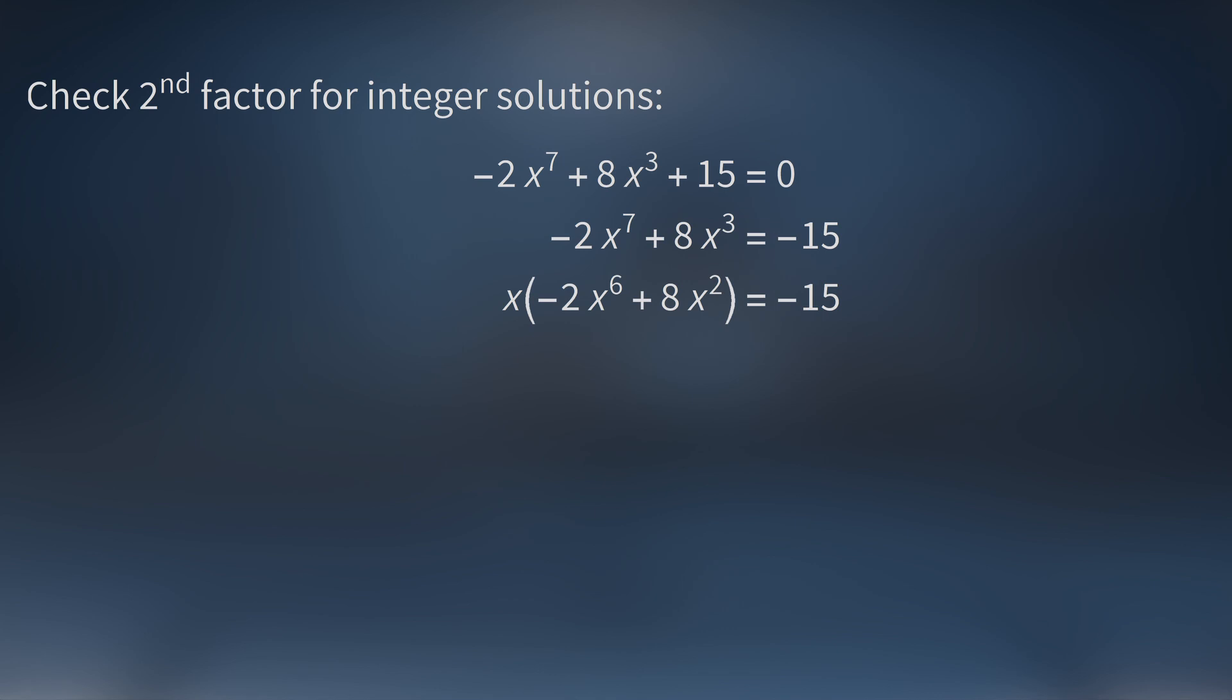Our objective is to find any integer x that's a solution to this equation. This means the first factor x needs to be an integer. But if x is an integer, then the second factor, negative 2x to the sixth plus 8x squared, will also be an integer. This is because all the coefficients are integers.